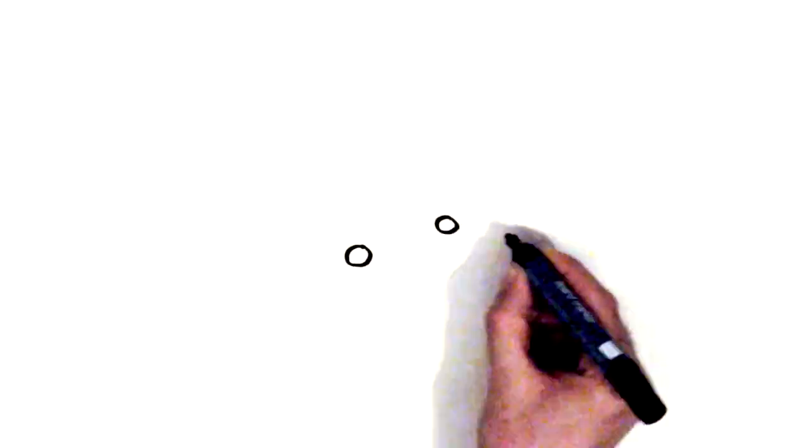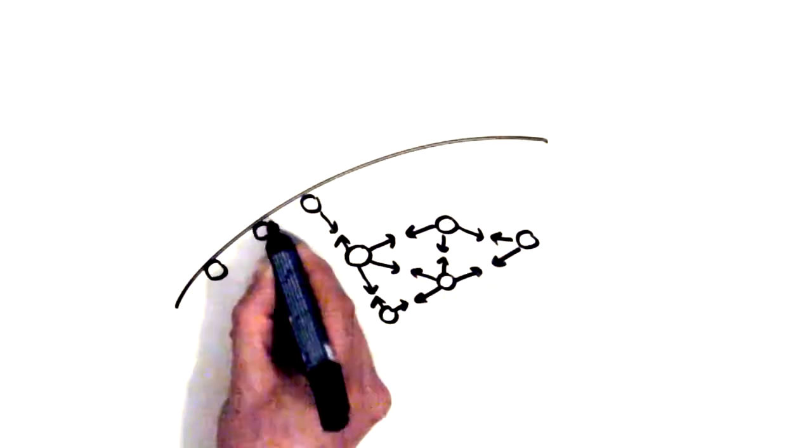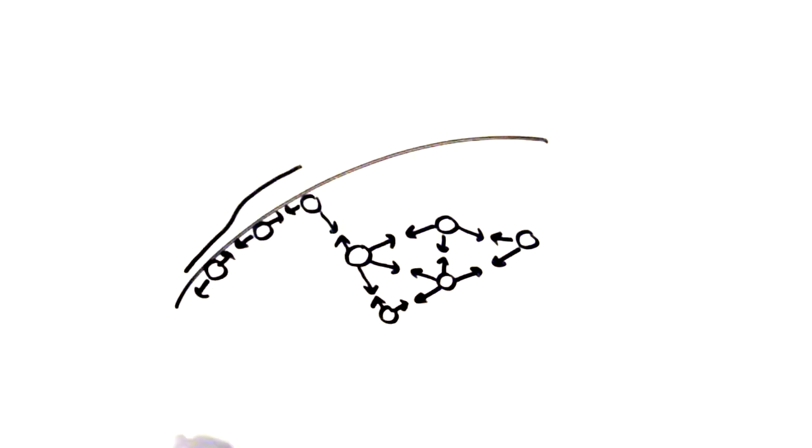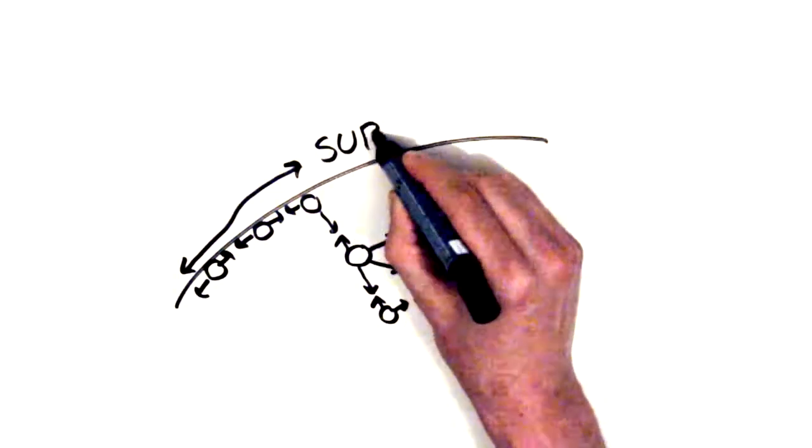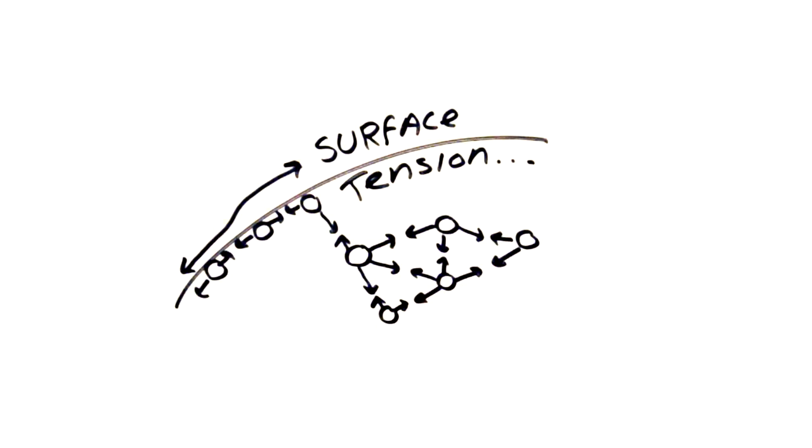Water molecules have a cohesive force, they want to stick together. But the molecules on the surface, however, don't have any water molecules to attach to, just air. This causes what is known as surface tension.